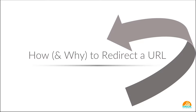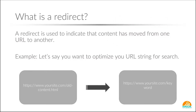Let's talk about how and why to redirect a URL. What is a redirect? Redirects are typically used to indicate that content has moved from one URL to another. Let's say you wanted to optimize your URL string for search, so you've changed the way your URL structure is. Maybe it's the same content but you've changed the path of that structure — maybe the old structure was your site forward slash old-content.html and now you've moved that to a keyword-optimized page. But you need to redirect that old link to the new link.